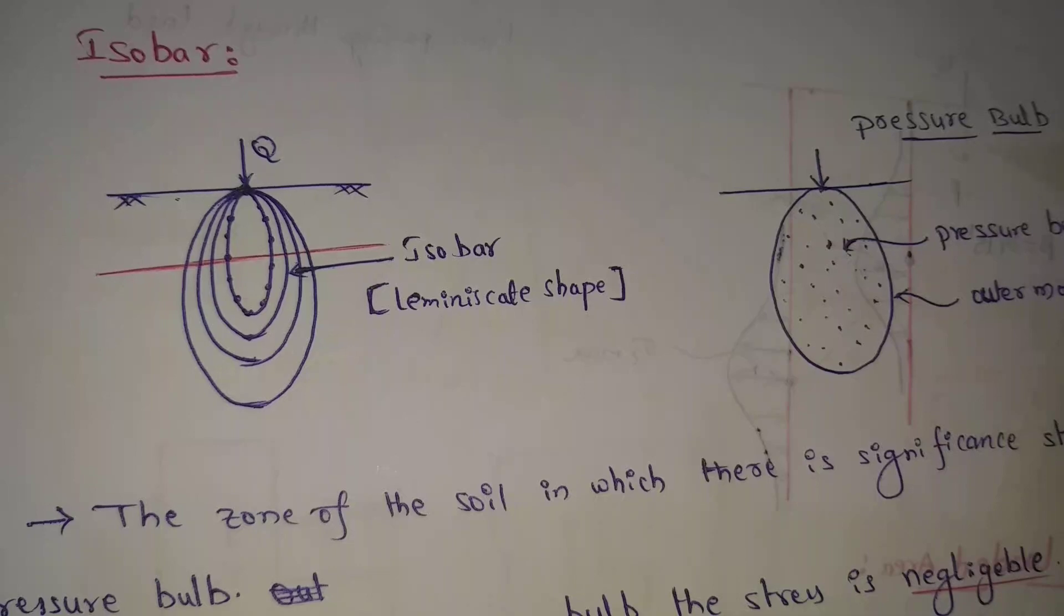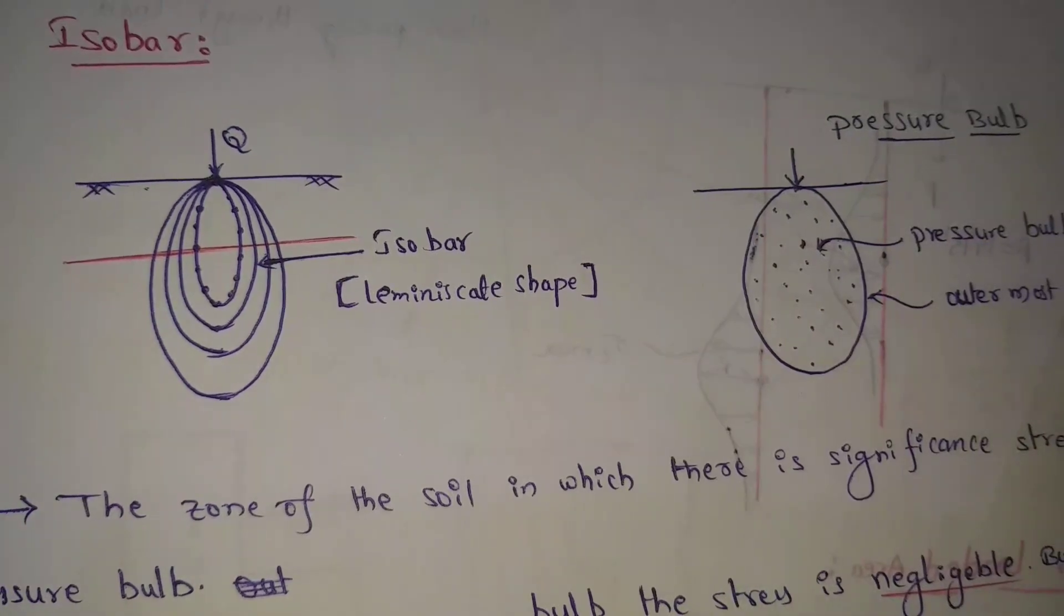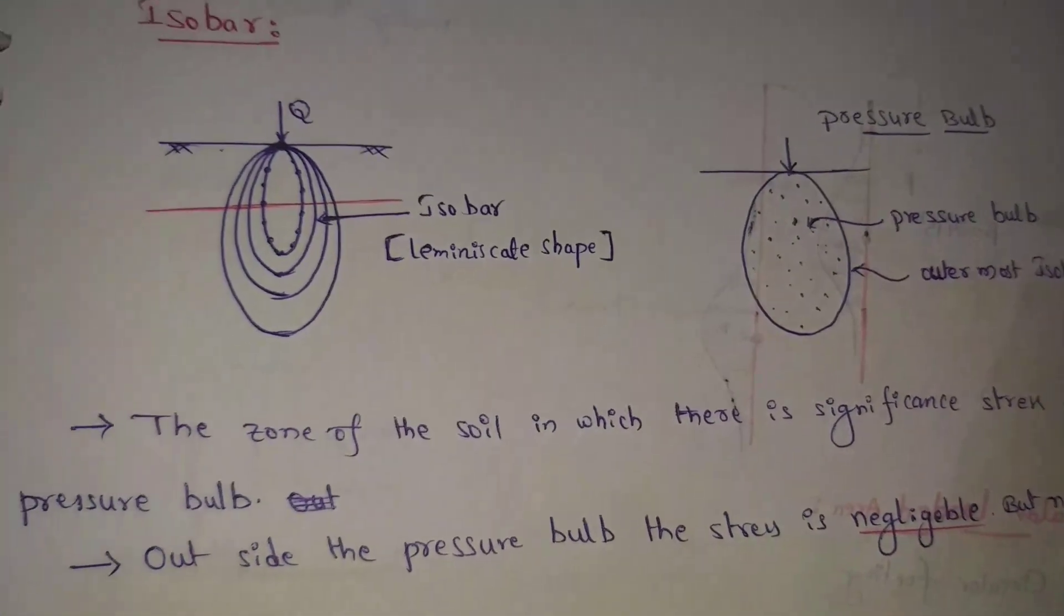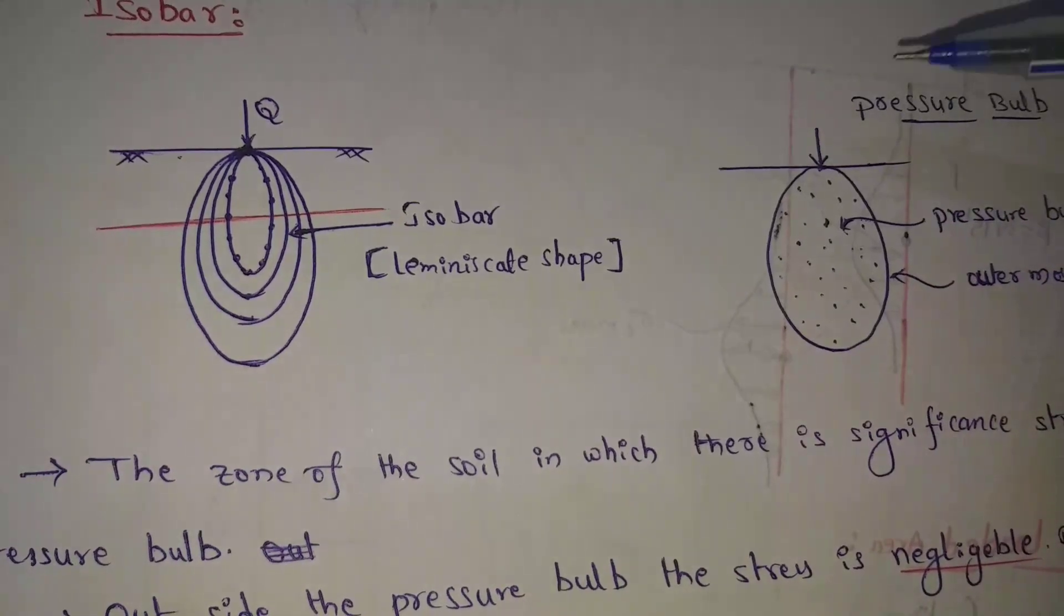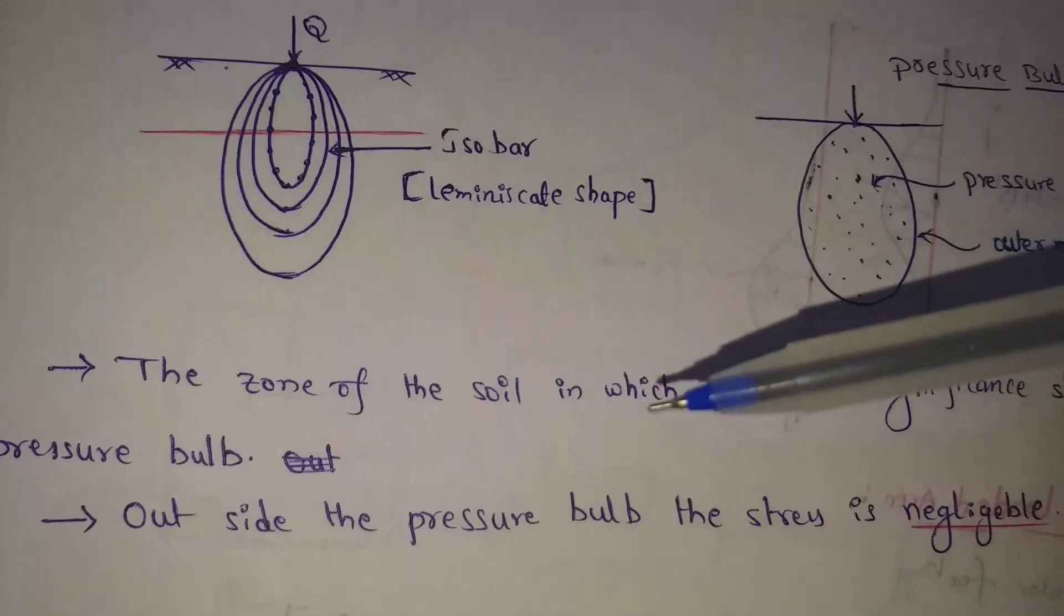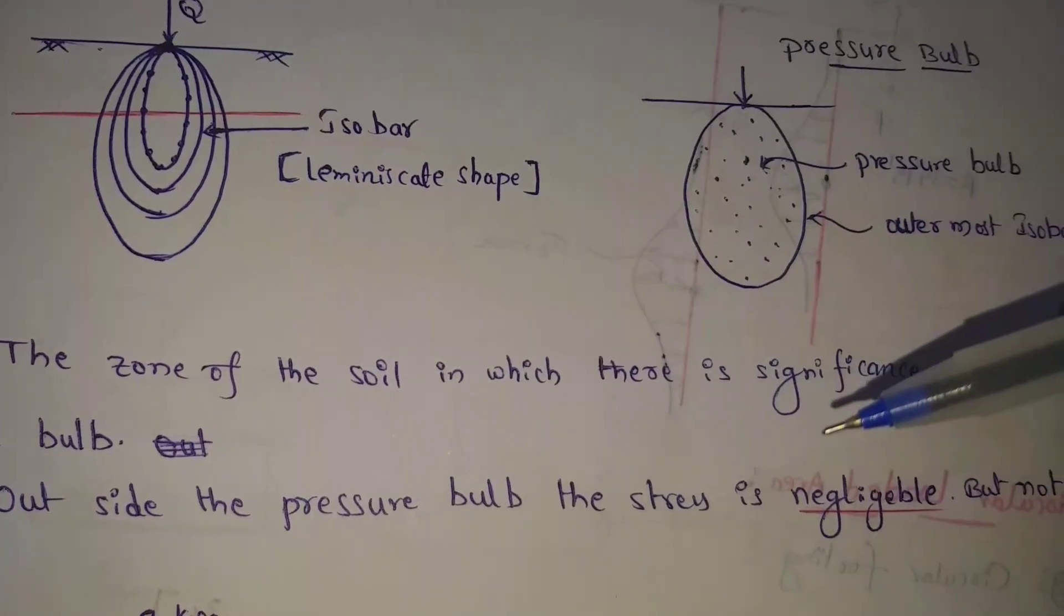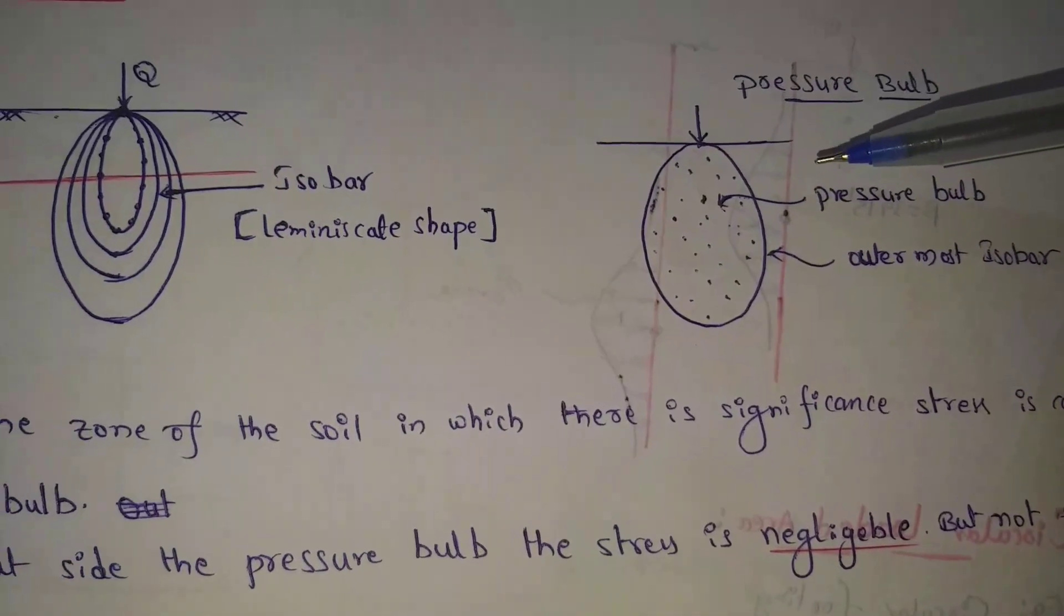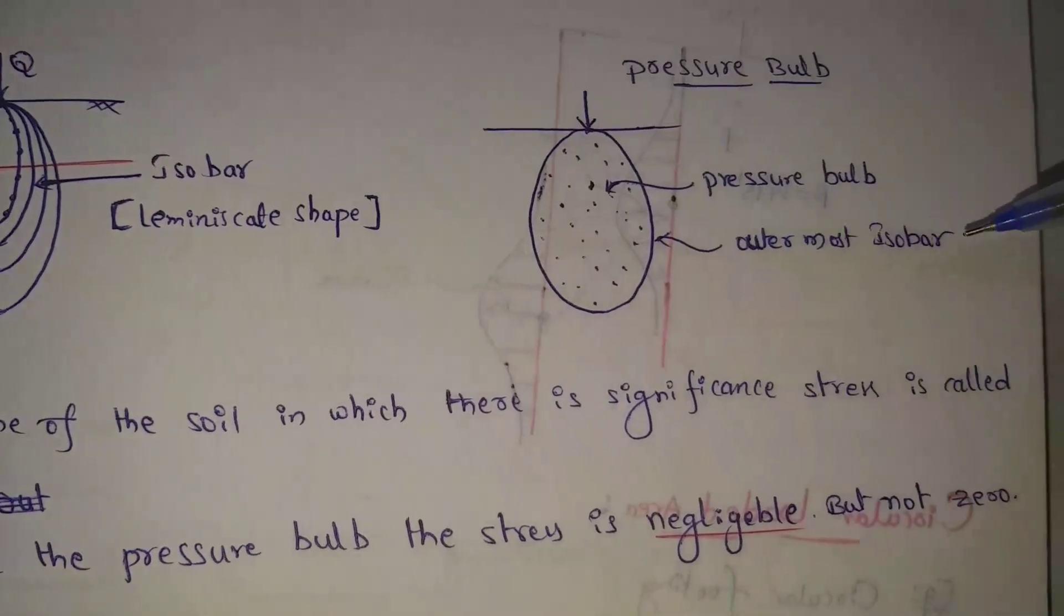Next one is pressure bulb. Pressure bulb means the zone of the soil in which there is significance stress is called pressure bulb. Here isobar and the isobar in which the stress is pressure, that isobar has a pressure bulb. Next one, the outside pressure bulb the stress is negligible but not zero.